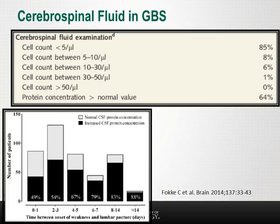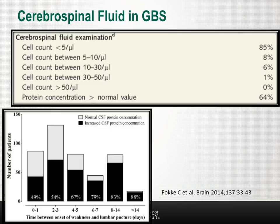Data from the same Brain 2014 paper show that normal cell counts of less than five per cubic millimeter were present in the vast majority of the 500-plus patients, and more than 50 cells were not seen in any of these patients. Only 50 percent of patients have elevated protein in the first couple of days. By the end of the first week, two-thirds or more have elevated protein — but that still leaves one-third without elevated protein early on, which is important to remember.